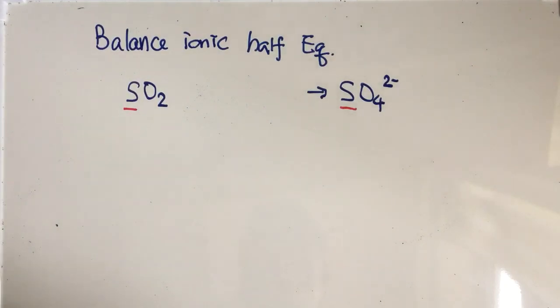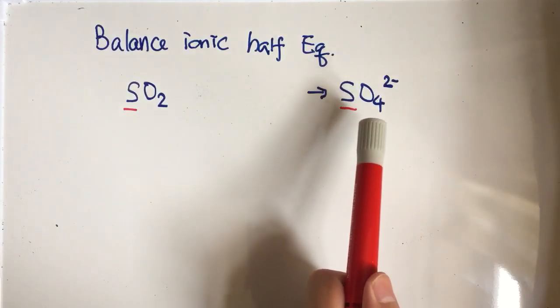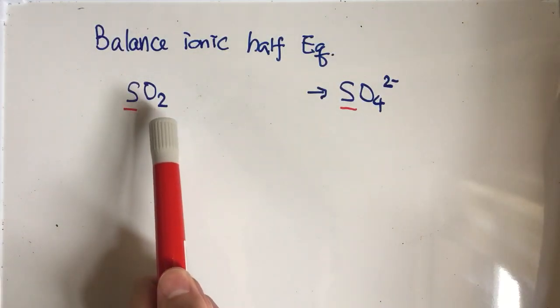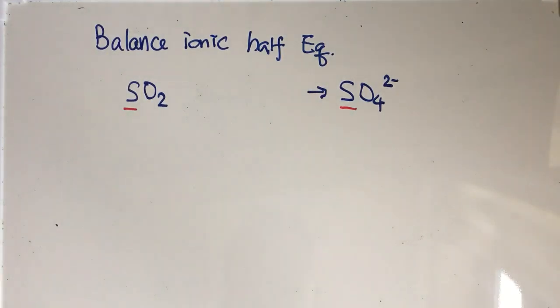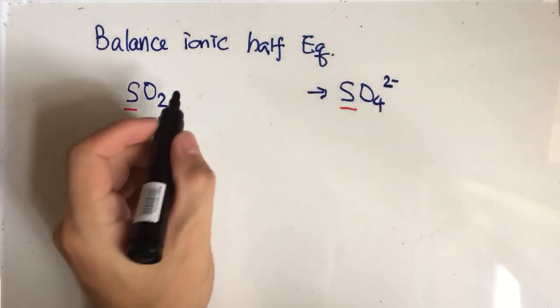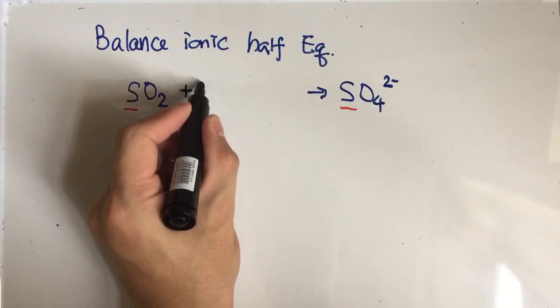Next, you have to balance the oxygen. The oxygen on the product side has four, and the oxygen on the reactant side only has two. That's why you have to add two water molecules on the reactant side: 2H2O.